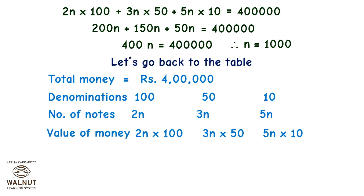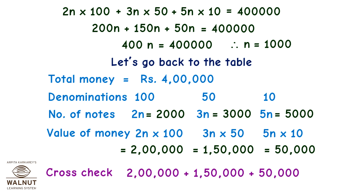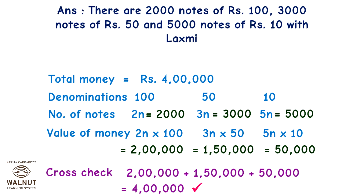Let's go back to the table. The number of notes are 2n equals 2000, 3n equals 3000, and 5n equals 5000. The value of money is 2 lakh, 1 lakh 50,000, and 50,000. Cross check: 2 lakh plus 1 lakh 50,000 plus 50,000 equals 4 lakh. Therefore there are 2000 notes of Rs 100, 3000 notes of Rs 50, and 5000 notes of Rs 10 with Lakshmi.